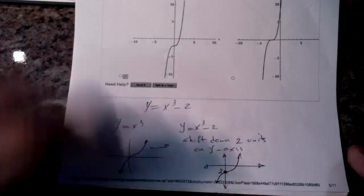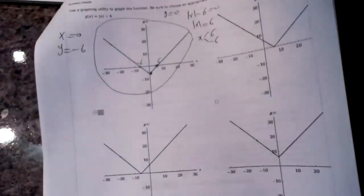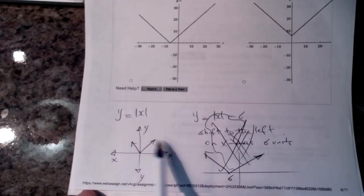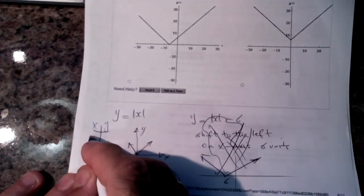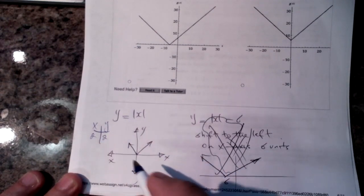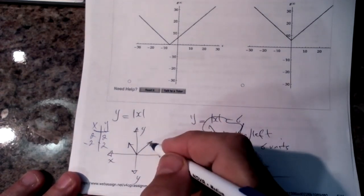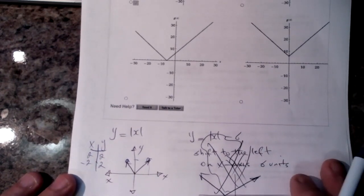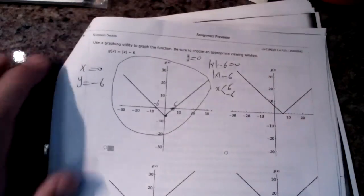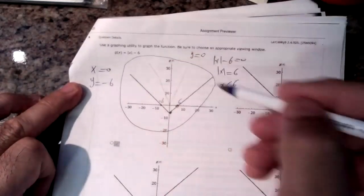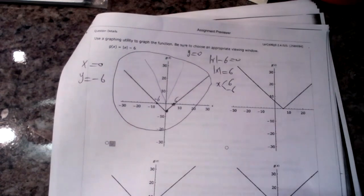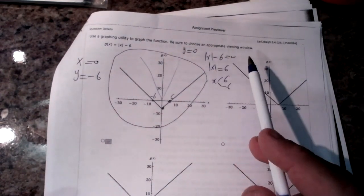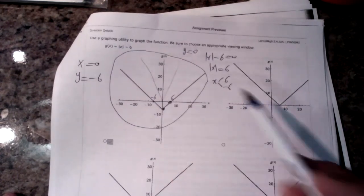Originally it was y equals x cubed. Now, what about the graph of absolute value of x? The absolute value of x looks like this: if x is 2, the value of y is 2; if x is negative 2, y is still 2. So it's symmetric like this. What you have in the problem is the absolute value of x minus 6, which means just shift it down six units. Or you could substitute 0 for y and find x, which gives you 6 and negative 6 — that's another way to verify which picture is correct.